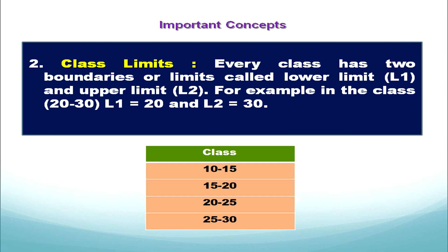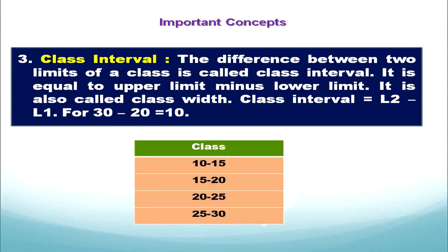Now let's discuss the third concept: class interval. The difference between the two limits of a class is called class interval — that means the gap between the lower limit and upper limit. We calculate it by subtracting the lower limit from the upper limit. For the class 10 to 15, upper limit 15 minus lower limit 10 gives a class interval of 5.